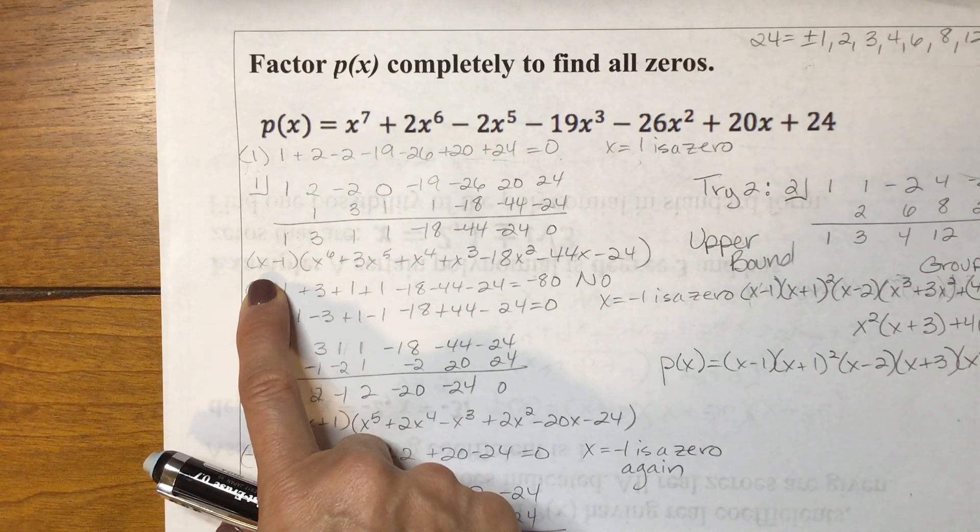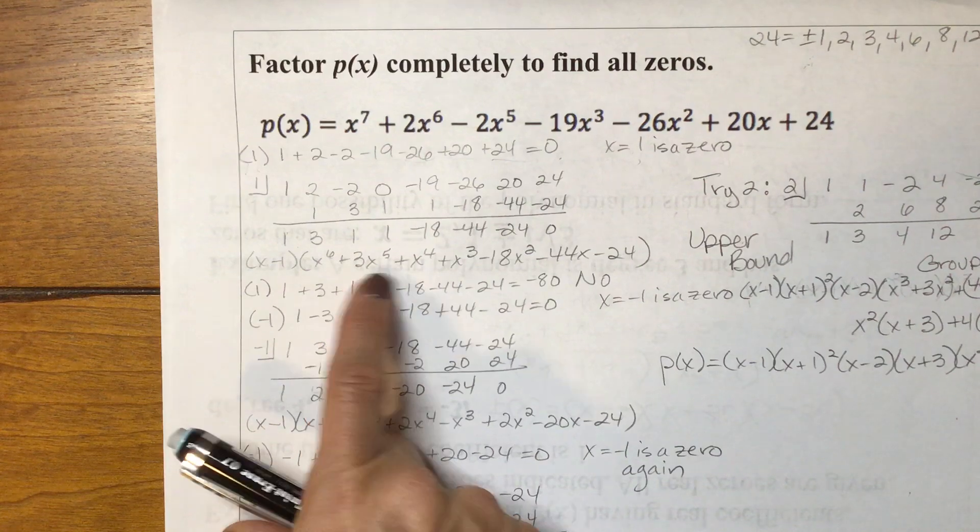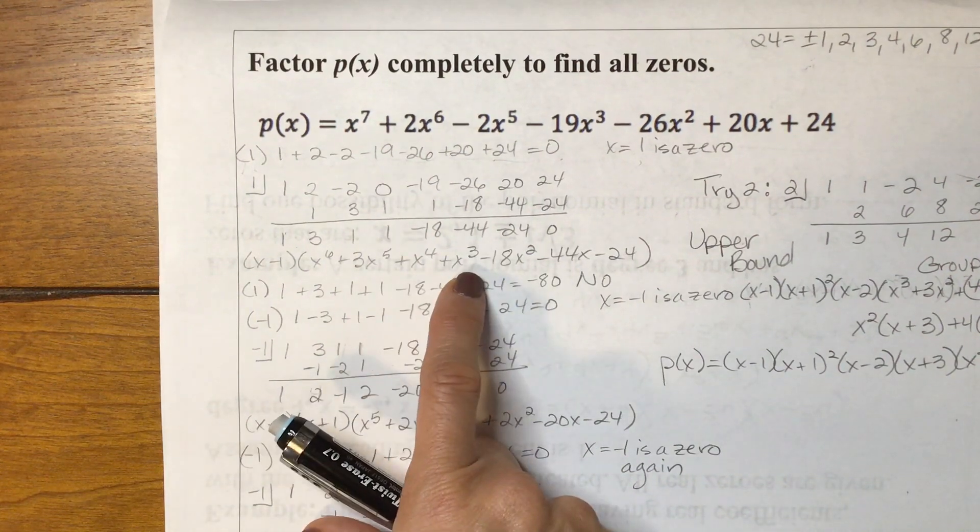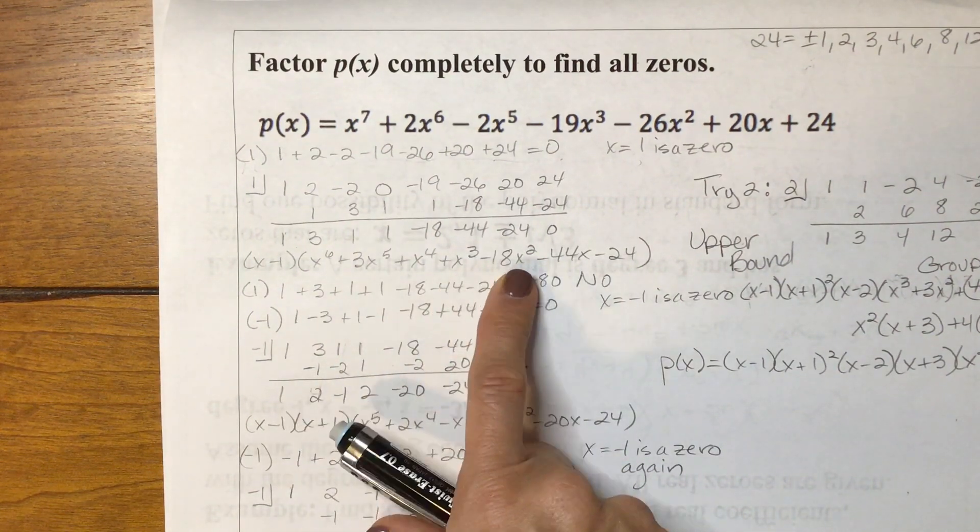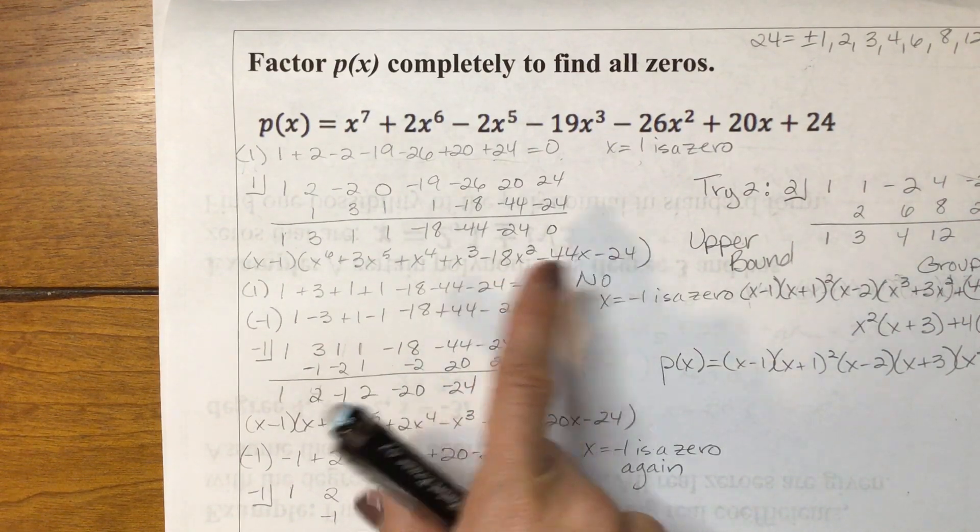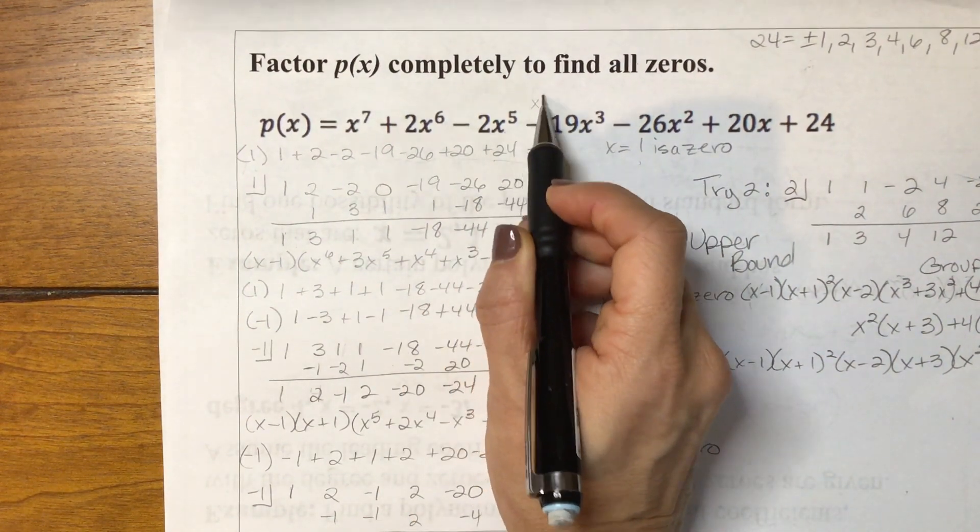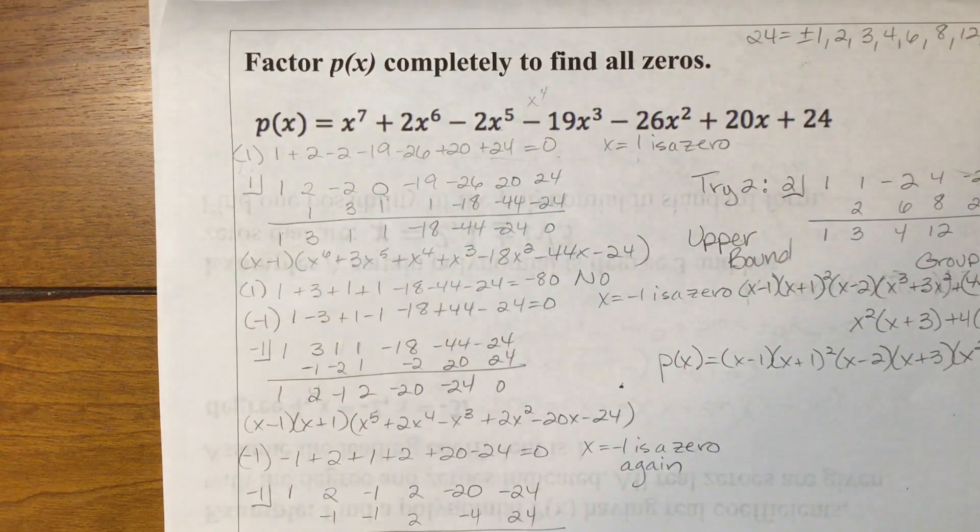When I did synthetic division, I got this result. So x minus 1 was a factor. And then what was left was x to the 6 plus 3x to the 5th plus x to the 4th plus x to the 3rd minus 18x squared minus 44x minus 24. Notice if you did not get that, looking up here, I am missing the x to the 4th term, so I put a placeholder in.